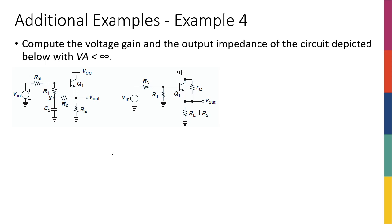One thing I forgot from the last slide: in Example 3, the R_in for the common emitter was the input impedance looking into the base, which would be R_pi plus whatever is in the emitter times beta plus 1. The resistance in the emitter was R_eq, so that gives us the expression for input resistance.